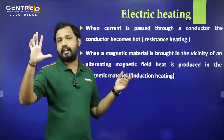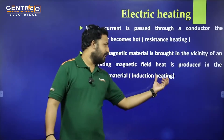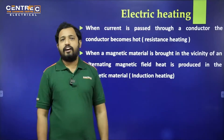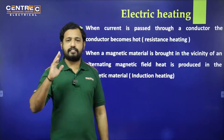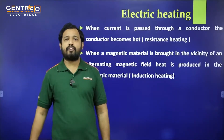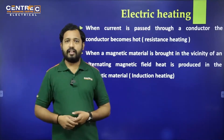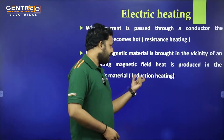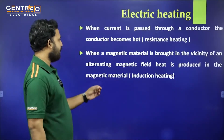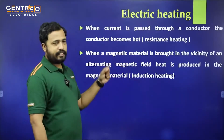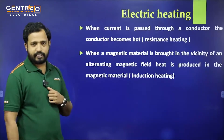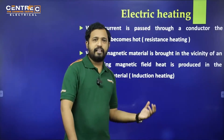The next method is Induction Heating. As the name indicates, some amount of electrical energy is converted into the form of heat. When a magnetic material is brought into the vicinity of an alternating magnetic field, heat is produced in the magnetic material. That is induction heating — simply electromagnetic induction.